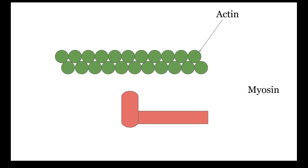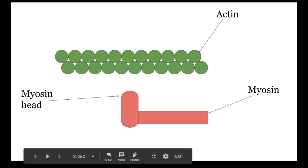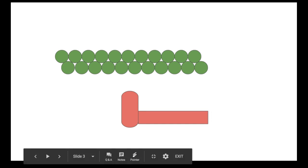The other myofilament is called myosin. This part of the myosin is the head of the myosin, which is eventually going to connect to the actin, and we're going to have that muscle contraction happen.